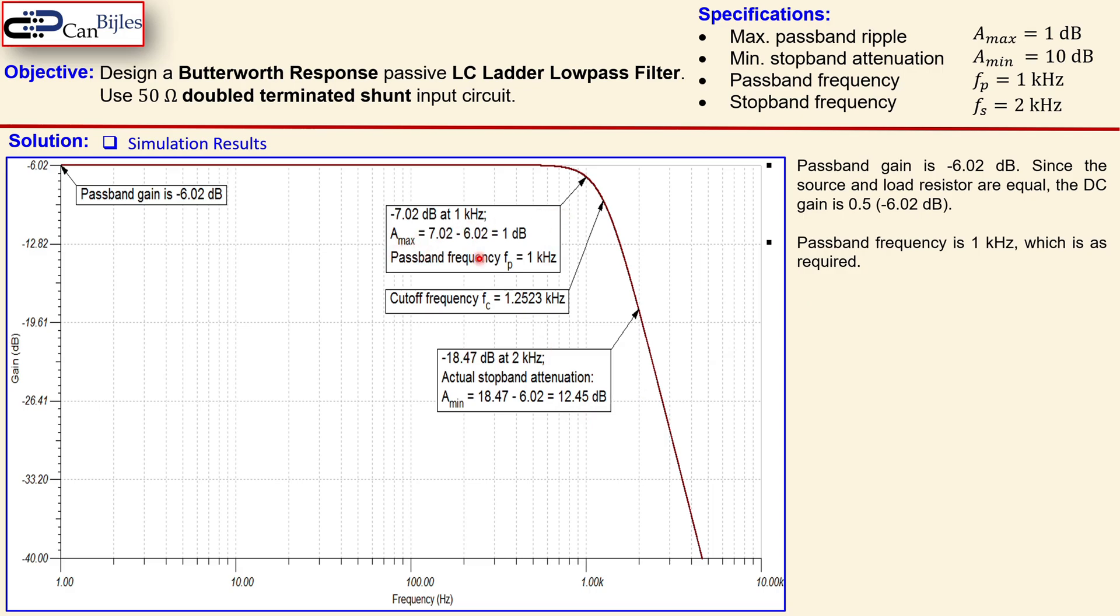Now when you go to the passband frequency it's one kilohertz. Why? Because if I go down from minus 6.02 to minus 7.02 dB, which is one dB down, which is the passband ripple, I reach it at one kilohertz, which is exactly what we want. So these two specifications, the first and the third one, are met.